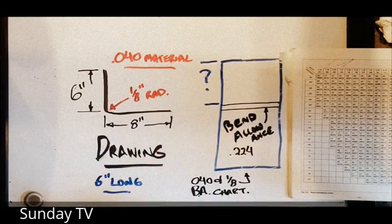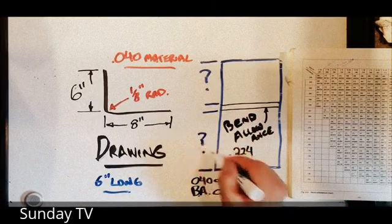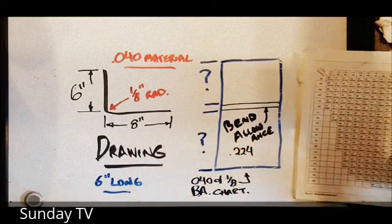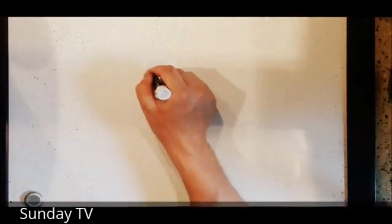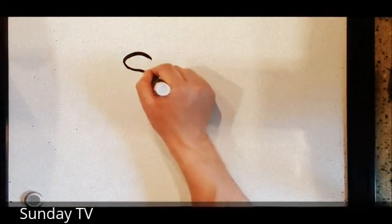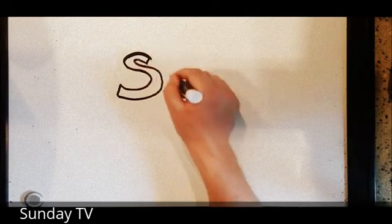Bend allowance usually has two numbers. It gives you a big number, in this case 0.224, to bend around a 90 degree angle, and it'll also give you another number that you can multiply by the number of degrees that you're bending.